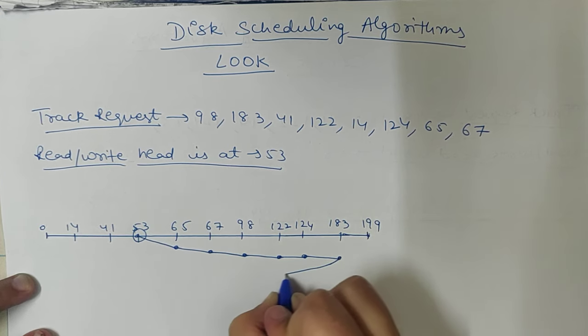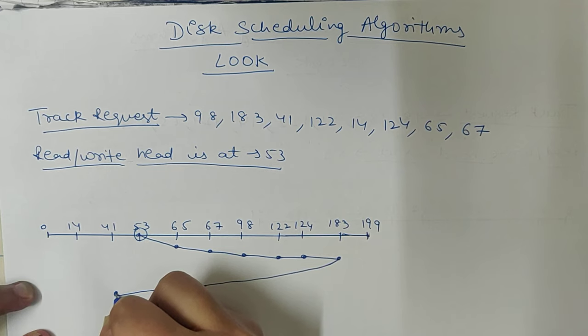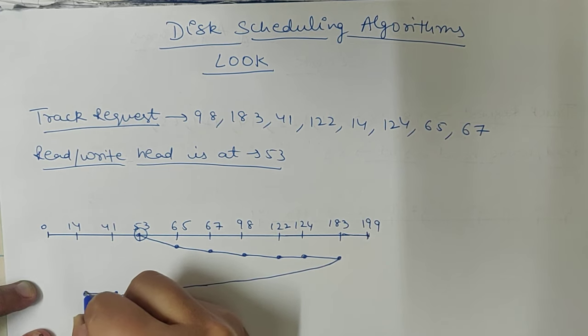Now we will see requests in reverse direction. We have already fulfilled those. Now this request is 41, and then last request is 14.